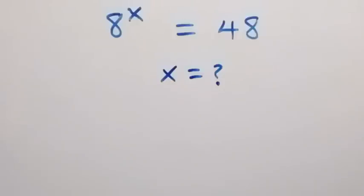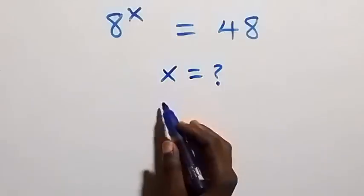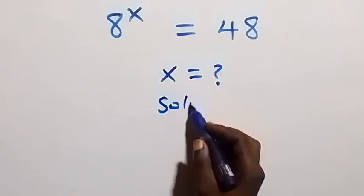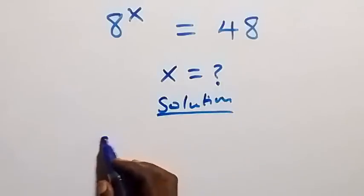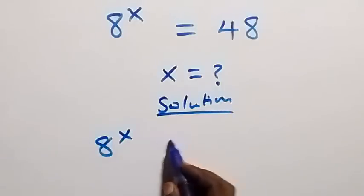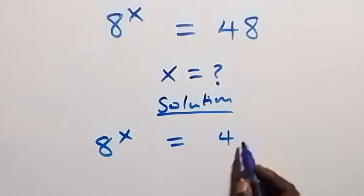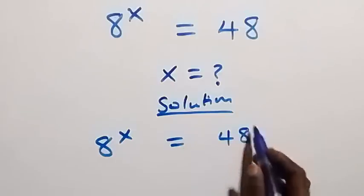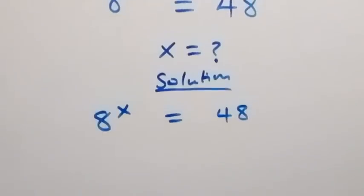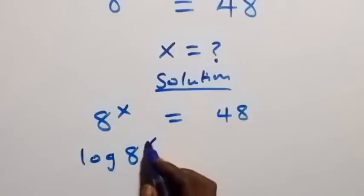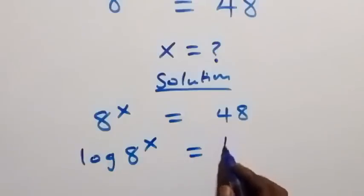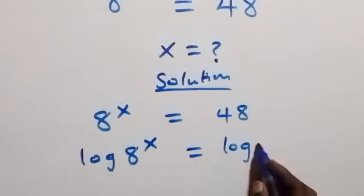Hello, you are welcome. How to solve for x in this nice exponential equation. We are given 8 raised to power x equals 48. From here we can take the log on both sides, then we have log 8 raised to power x equals log 48.